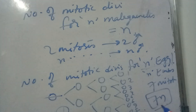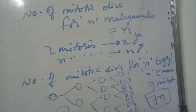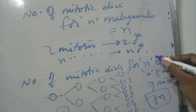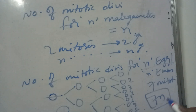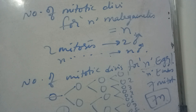One egg you want means seven mitotic divisions have to occur. Two eggs you want means seven into two — fourteen mitotic divisions will be occurring. If you remember these formulas, it will be very easy to solve the problems. For N seeds to be formed, number of meiotic divisions is N plus N by 4. For example, 100 seeds: 100 plus 100 by 4, that means 125.